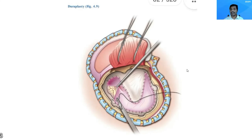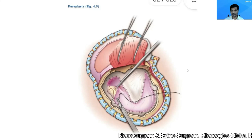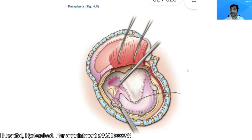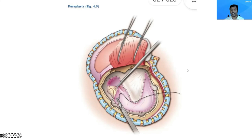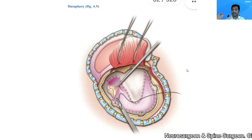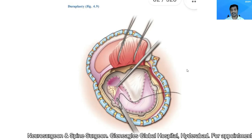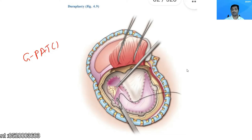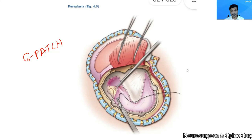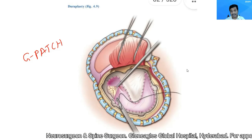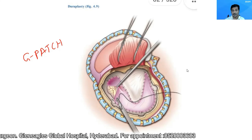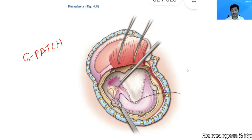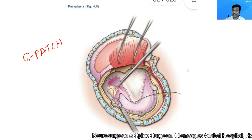Once the procedure is done, I complete the duroplasty. I will either use the pericranium which I harvested before. If I was not able to raise the pericranium intact, or if it is torn due to trauma — which happens more frequently in traumatic brain injuries — I sometimes use the inner layer of galea, which is a robust layer, to complete the duroplasty. We also use artificial patches like G-patches, which are commercially available, to complete the duroplasty. There are also surgeons who don't close the dura; they place Abgel over it, which forms a layer over time. Contrary to common belief, in our experience, even with Abgel duroplasty, the incidence of CSF leak is less.